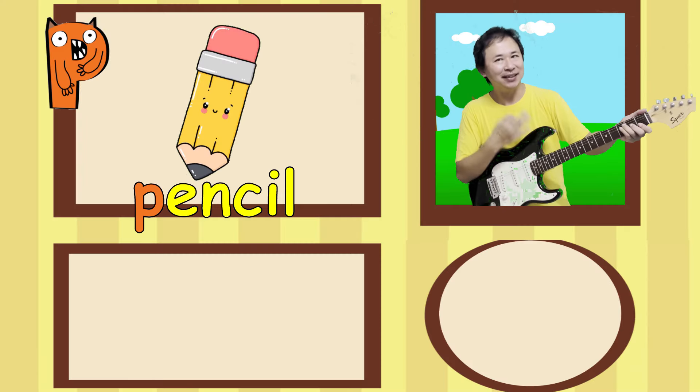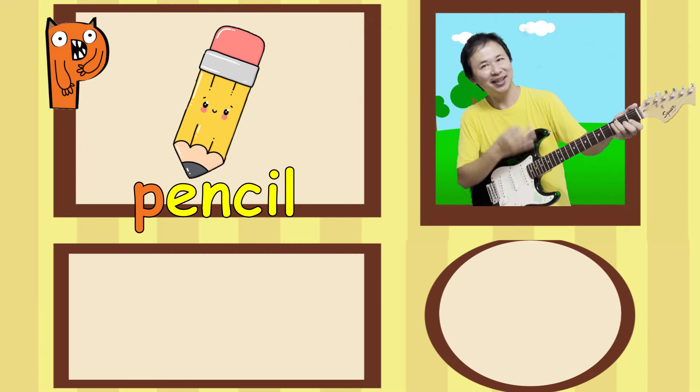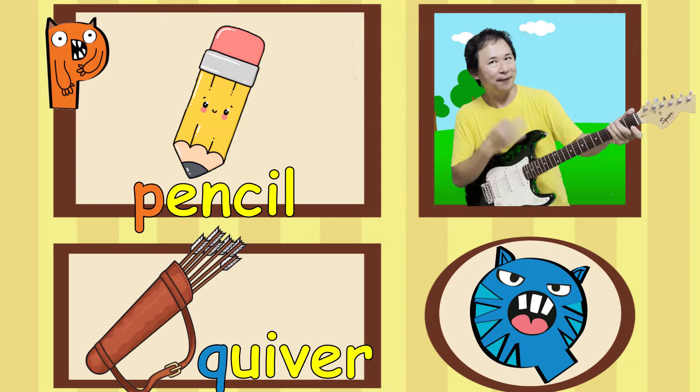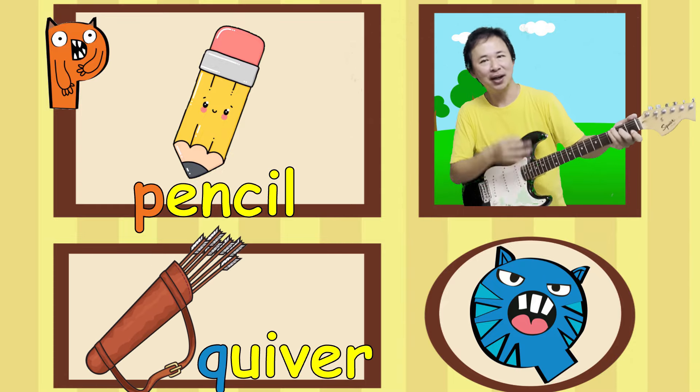P is for pencil. p, p, p. Q is for quiver. qu, qu, qu.